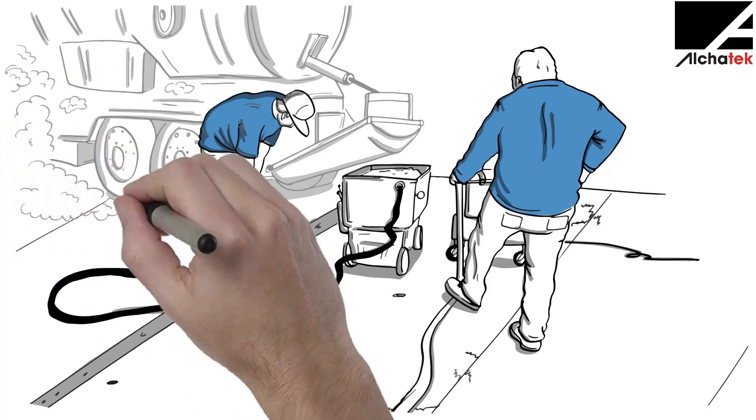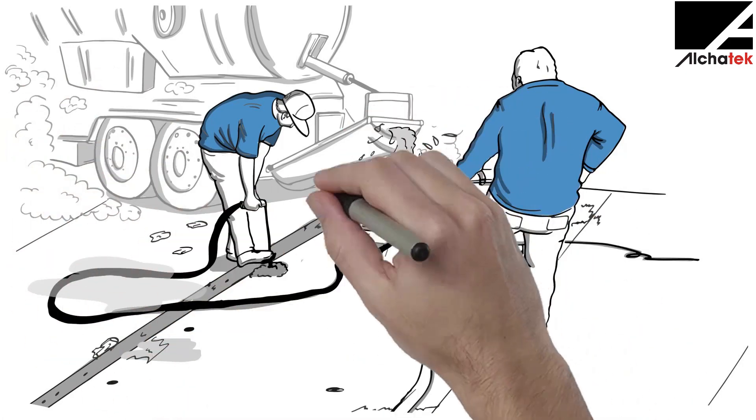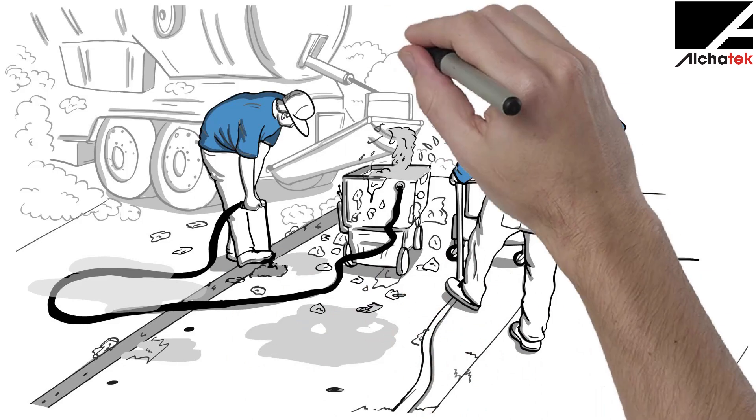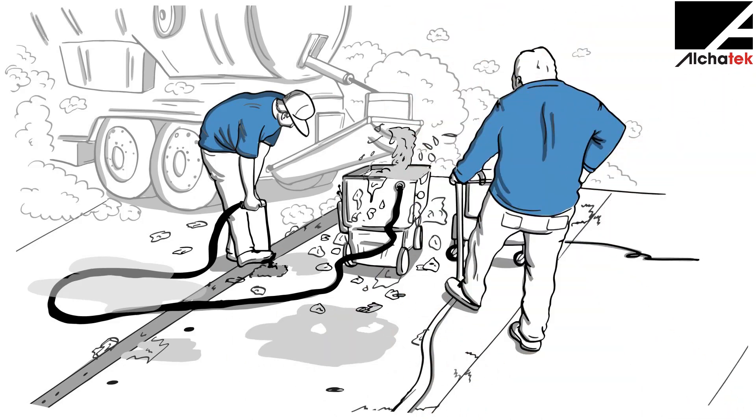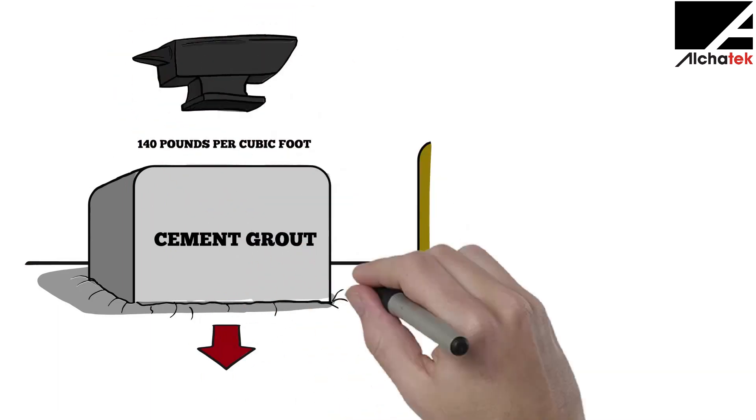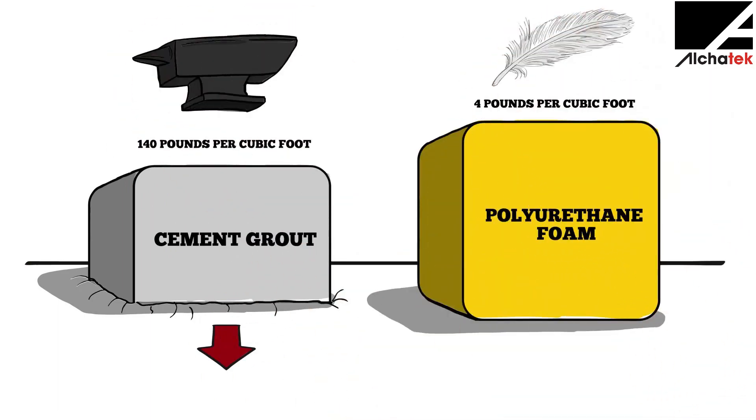While it's less expensive than replacing the entire slab, it's still messy. It can shrink or crack or even wash out completely, leaving you with the same problem all over again. Because cement is much heavier than polyurethane, it's likely to sink again over time.